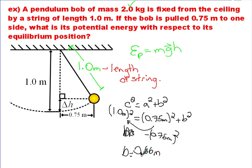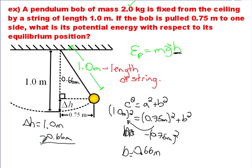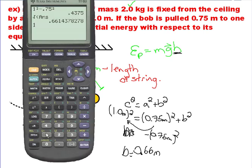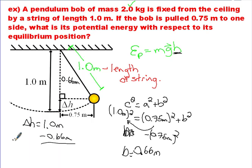So 0.66 meters is the distance from the ceiling to the bob when it's pulled to the side. Now we want the height the bob has risen above its equilibrium position. To find ΔH, we take 1 meter minus 0.66 meters. I'll keep that full answer in the calculator rather than rounding to 0.66, and this gives us approximately 0.34 meters. Now I can do the potential energy calculation.